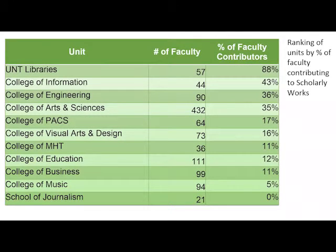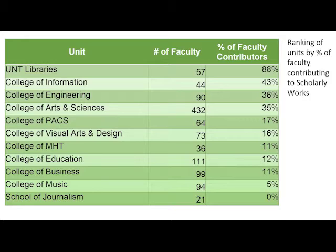This is a list of who is actually contributing to our repository, ranked by percentage of faculty. UNT Libraries leads at 88%, followed by the College of Information — which is what you'd hope to see — then surprisingly Engineering, Arts and Sciences, and PACs. Towards the end, more industrial or professional-oriented colleges such as Business, Music, and Journalism are our lowest percentages. This points to a trend between academic scholarship versus scholarship produced for industry or professionalism, and points to a need to close that gap.